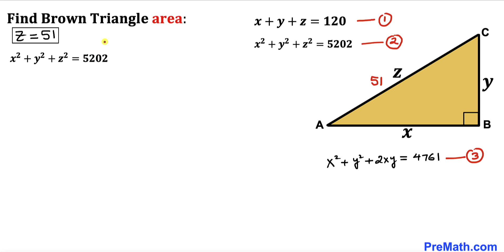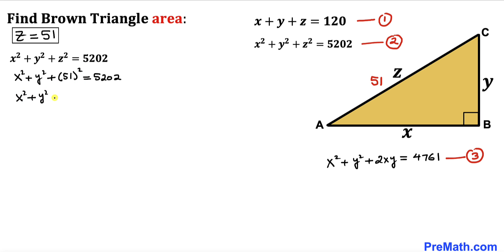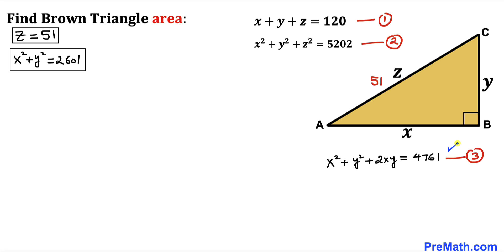Returning to equation two — X squared plus Y squared plus Z squared equals 5202 — and substituting Z equals 51, we get X squared plus Y squared plus 2601 equals 5202. Subtracting 2601 from both sides, our X squared plus Y squared value turns out to be 2601.